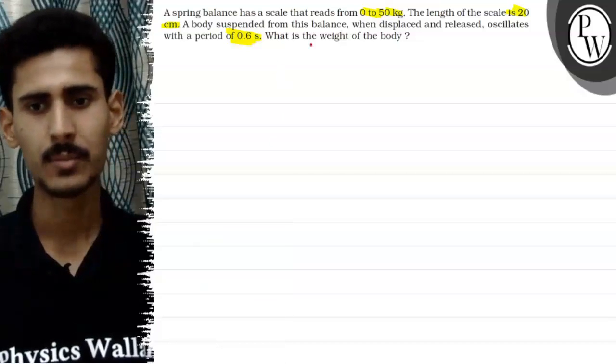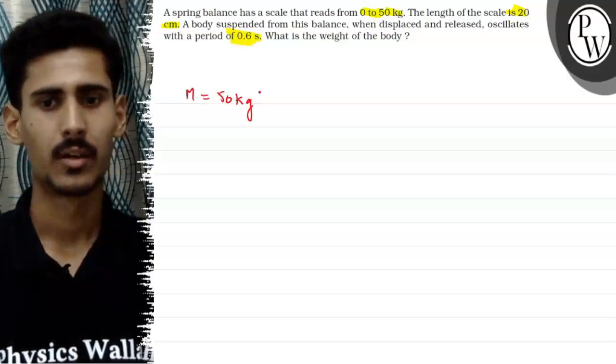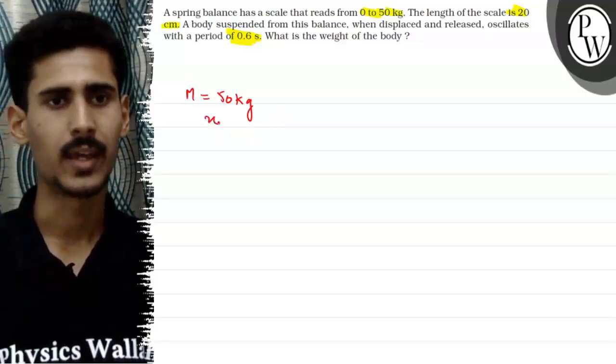The maximum mass the scale can read is given 50 kgs. And the maximum displacement x, we denote x as maximum displacement in the spring balance.